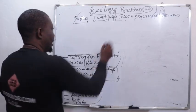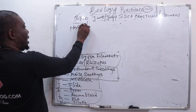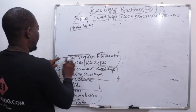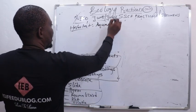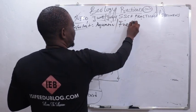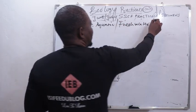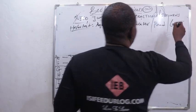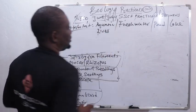Let's start with the habitat of E and F. The habitat of E is aquatic — freshwater. You can see it in ponds, lakes, and also in rivers. So you have to mention it this way.